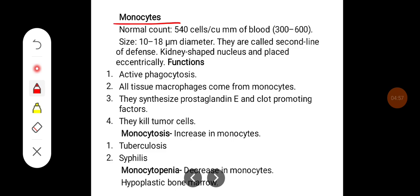Monocytes normal count is around 540 cells per cubic millimeter of blood, can range between 300 to 600. The size is larger, around 10 to 18 microns, and they are called the second line of defense mechanism. There will be a kidney-shaped nucleus placed eccentrically.